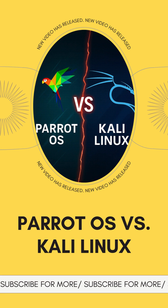Parrot OS and Kali Linux both wear the badges of security distributions, but they are built with slightly different missions in mind. Parrot OS, which is Debian-based, focuses on privacy, anonymity, and a well-rounded security toolkit. While Kali Linux, also Debian-based, is tailor-made for hardcore penetration testing and forensics.